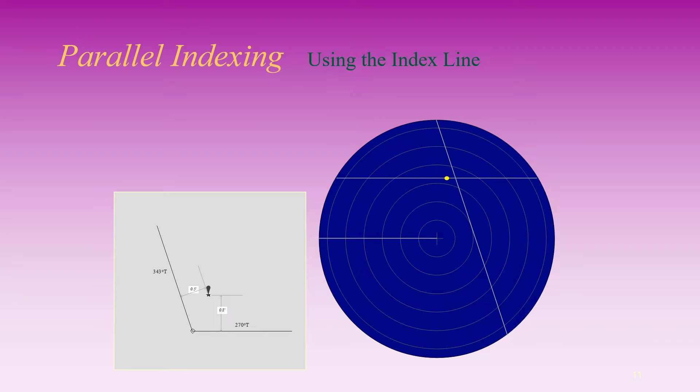For example, the vessel is using the light beacon as a reference mark along the two legs of the planned route: 270 degrees true and 343 degrees true, as you can see in the diagram.